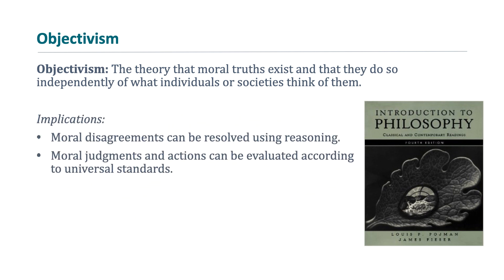If we are objectivists, what follows? Pojman argues that if we hold to objective moral values, then moral disagreements can be resolved using reason. If we deny that moral values are objective, the only thing left is coercion and power. If we want to solve disagreements using reason, we must hold to some sort of moral objectivism. He also argues that moral judgments and actions can be evaluated according to universal standards under moral objectivism, but if we reject it, there's no way to determine which moral acts are superior to others. This covers the argument for moral objectivism.